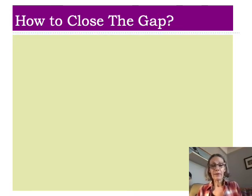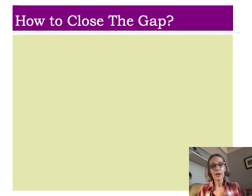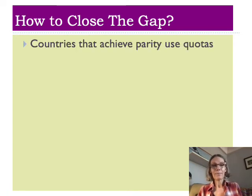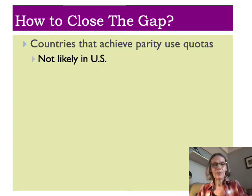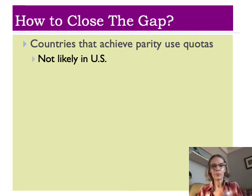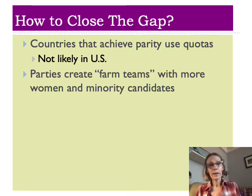If you're interested in the sociological representation theory and want Congress to look more like the U.S. population, how might we achieve that? Some countries use racial and gender quotas to achieve parity. However, that's not likely to happen in the United States — using quotas would rub against our general values regarding equal protection of the law and treating everybody equally, and probably wouldn't get any traction here.